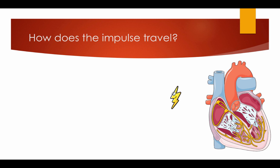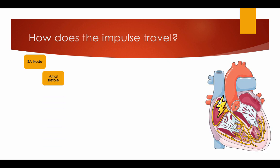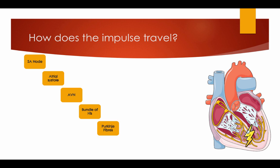How does the impulse travel? We're going to use Bolt here to show how the impulse travels through the heart. It starts in the SA node and causes atrial systole, causing the heart to contract. It then moves on to the AVN, down to the bundle of His, and finally the Purkinje fibres, causing ventricular systole — again causing the heart to contract.